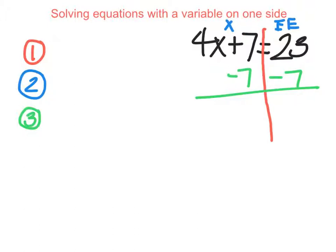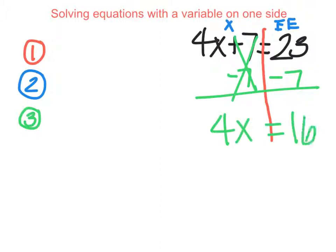The rule in math says whatever you do to one side — we're minusing 7 on the left — we also have to do that exact same thing on the right. So that's why there's a minus 7 on both sides of our line. This line helps us keep things balanced. Whatever happens on the left side also has to happen on the right side. Now doing our math: plus 7 minus 7 is going to cancel, leaving us with 4x equals 23 minus 7, which is 16.